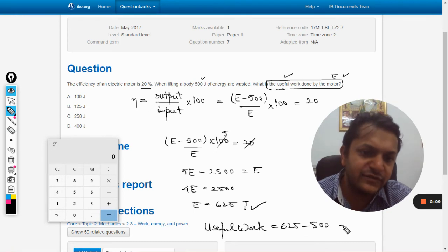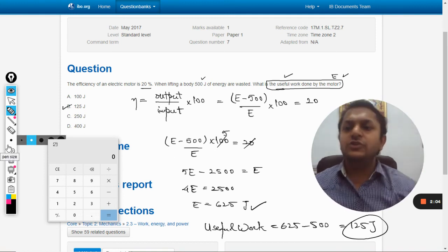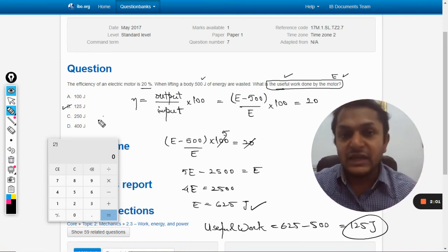625 minus 500, the answer comes out to be 125 joules. So your answer is 125 joules, B. So let us verify, is the answer B? Absolutely correct.